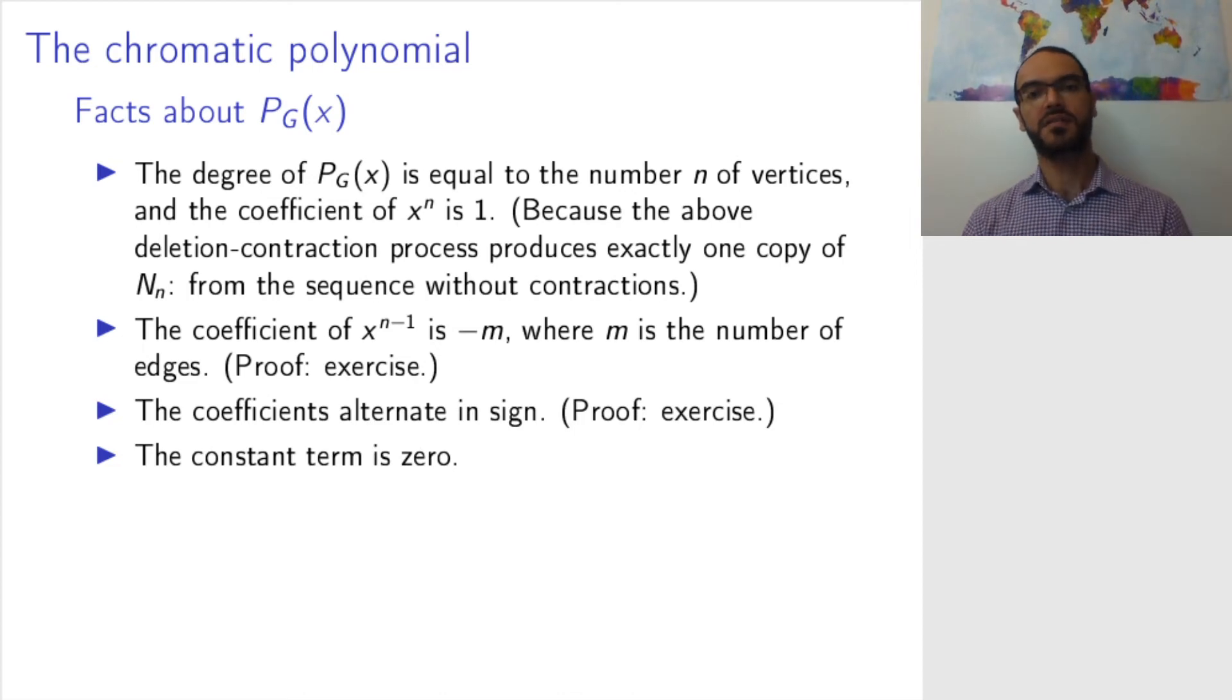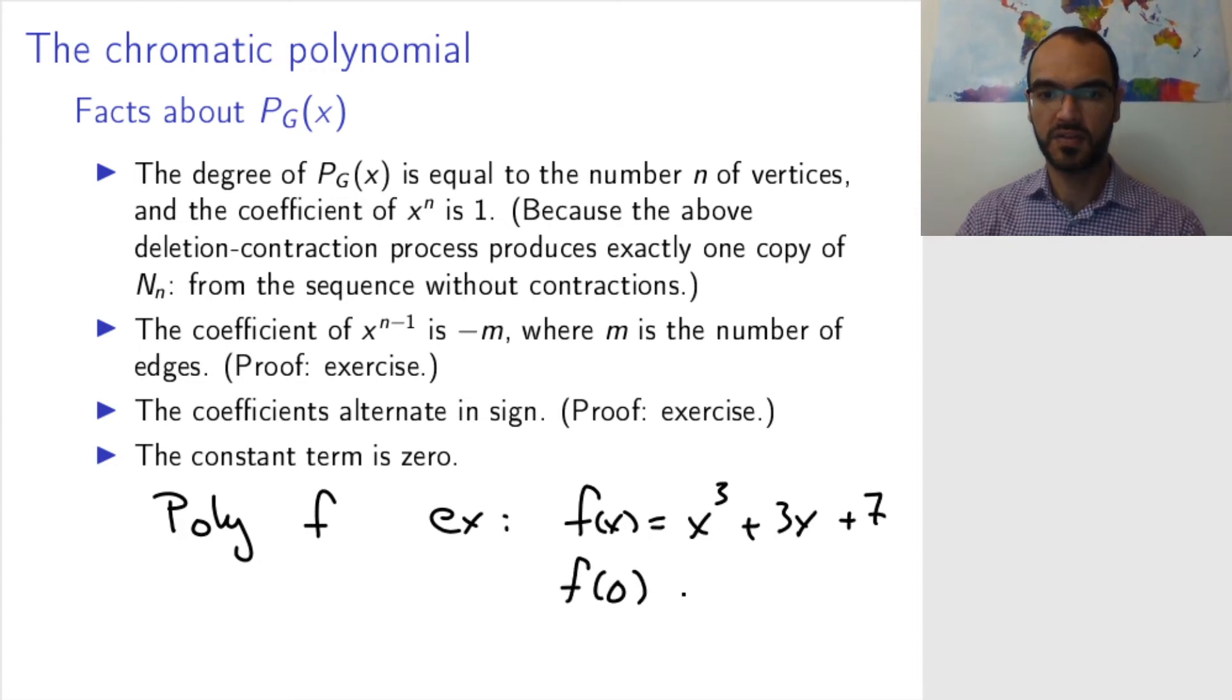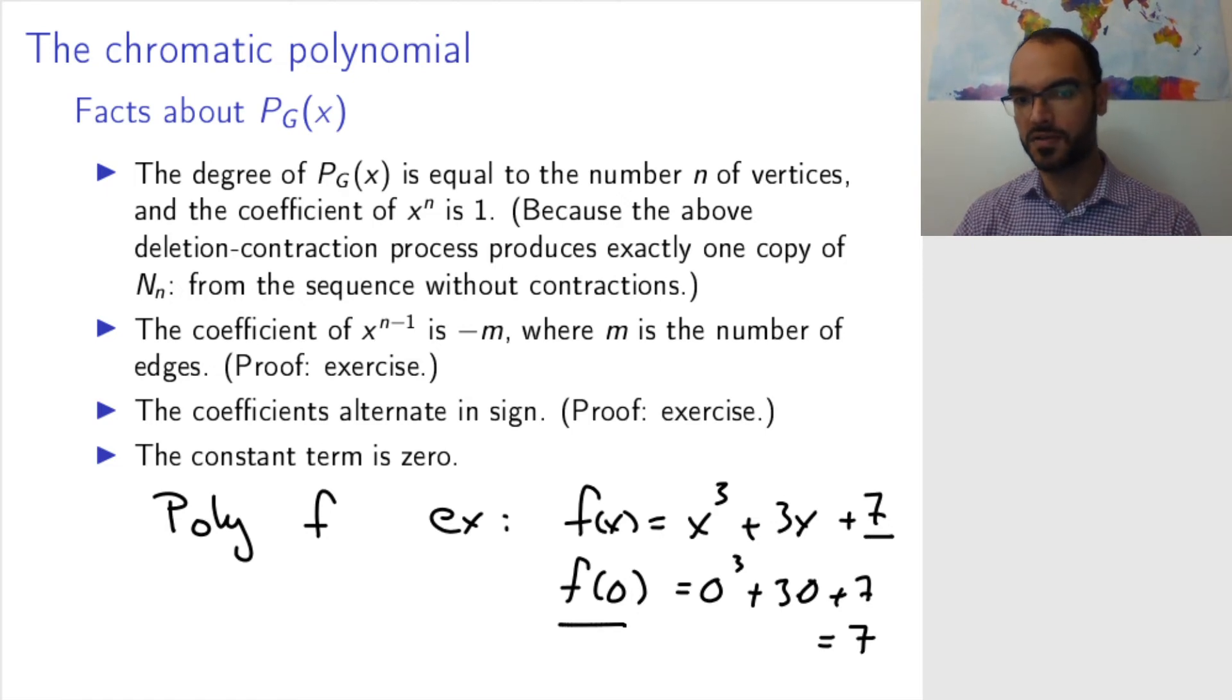The constant term is 0. This is an interesting fact. In general, if you have a polynomial f, say, for example, f of x equals x cubed plus 3x plus 7, then f of 0 is 0 times 3 plus 3 times 0 plus 7, which is equal to 7. So, the constant term is the value at 0.